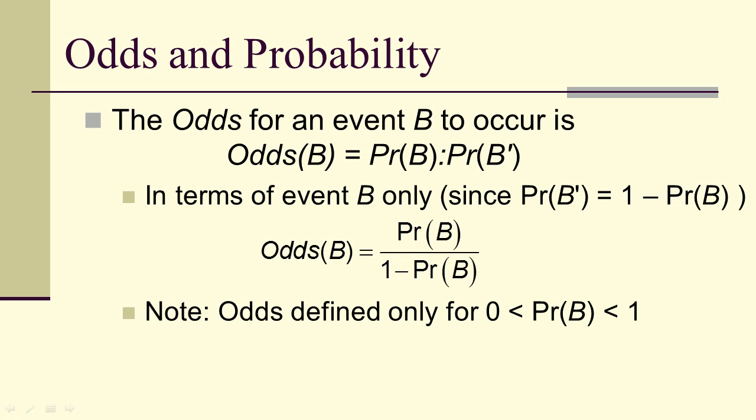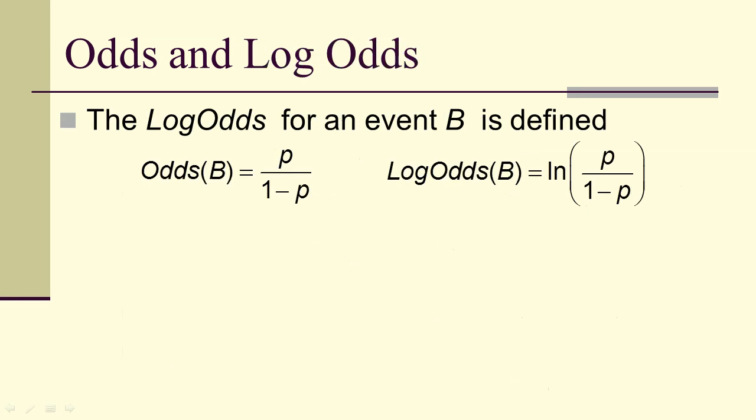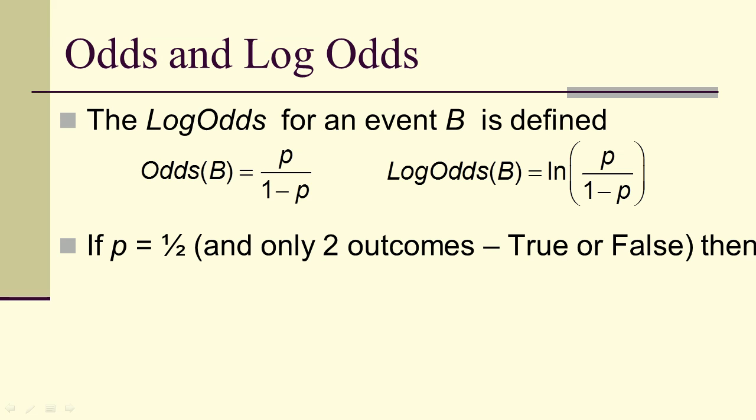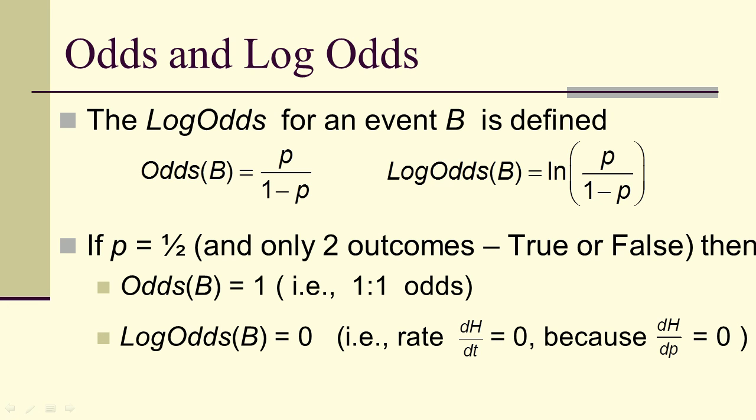So in terms of event B only, the probability of B prime is 1 minus the probability of B. So the odds of B occurring is the probability of B over 1 minus the probability of B. So odds are only defined between 0 and 1, not including the 0 or the 1 for the probabilities. So if we let P be the probability of something happening, then the odds is P over 1 minus P. The log odds is the logarithm of the odds. So if P is equal to a half, there's only two outcomes, true or false. Then the odds of B is 1, in other words, 1 to 1 odds, or 50-50 chance. The log odds is 0. In other words, we don't see any change. The derivative with respect to P would be 0 of the entropy. And remember, maximum entropy occurs when we get a derivative of 0.